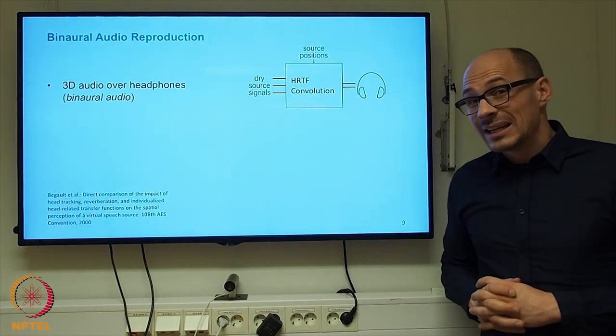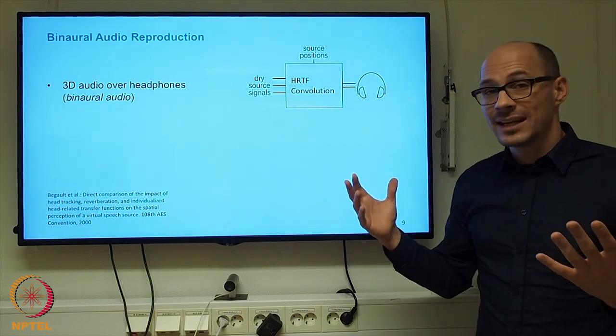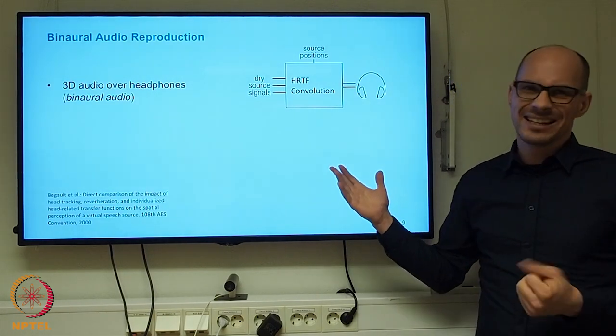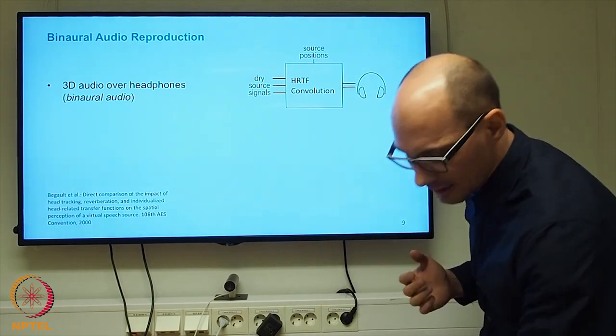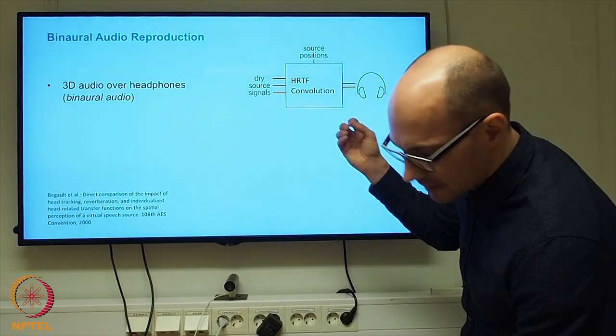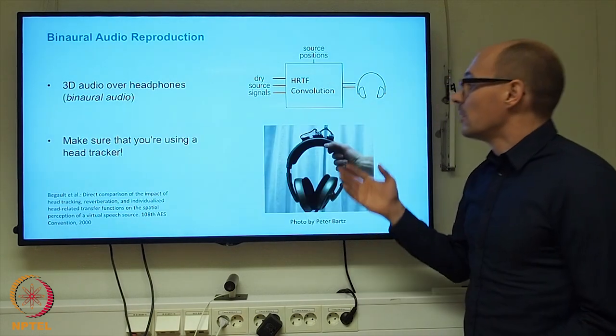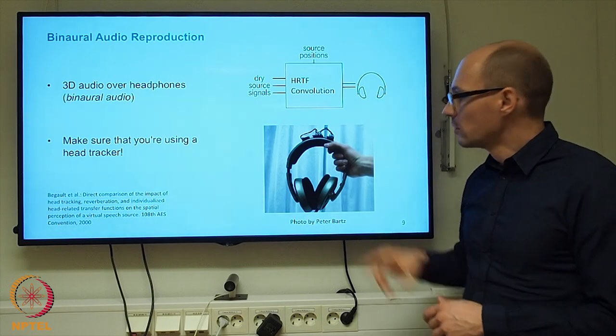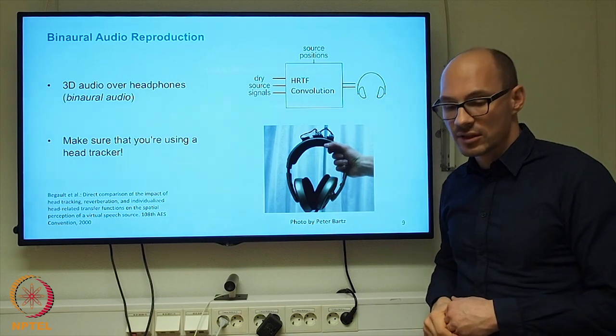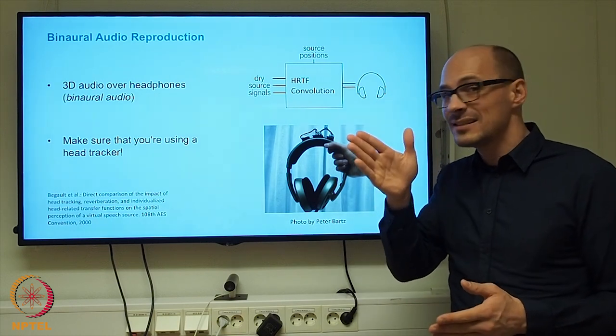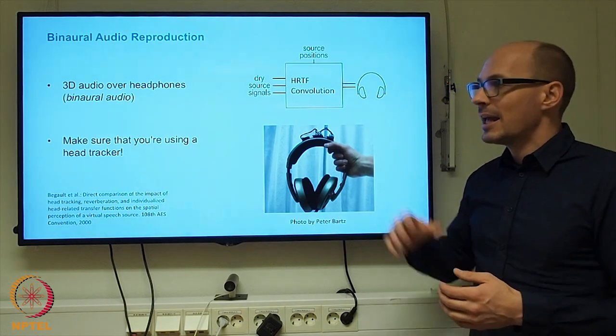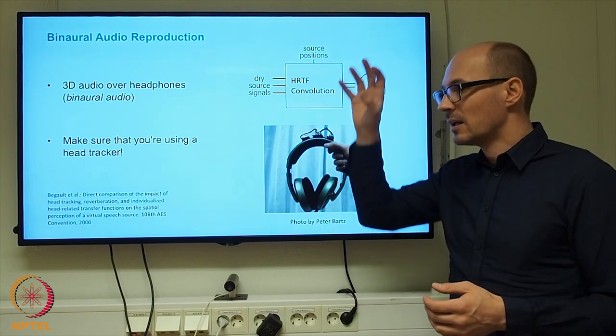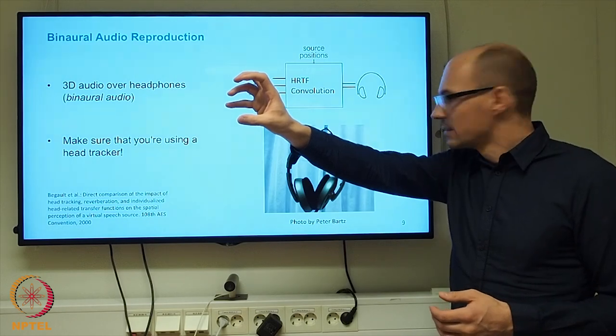Now, we're still not taking into account the movements of the listener upon playback, so this technically is not very much different from a dummy head recording. But since we have all the source signals independent of each other, we can actually equip the headphones of the user with a sensor that measures the instantaneous orientation, and then we can take the instantaneous orientation of the user into account, and adapt the processing, the selection of head-related transfer functions, such that even if the user moves the head, the sound source stays stable in space.